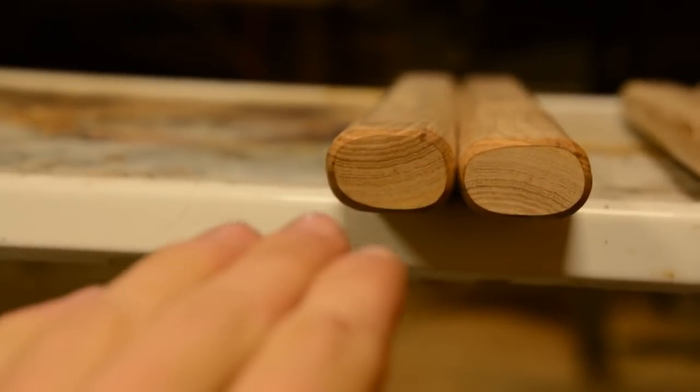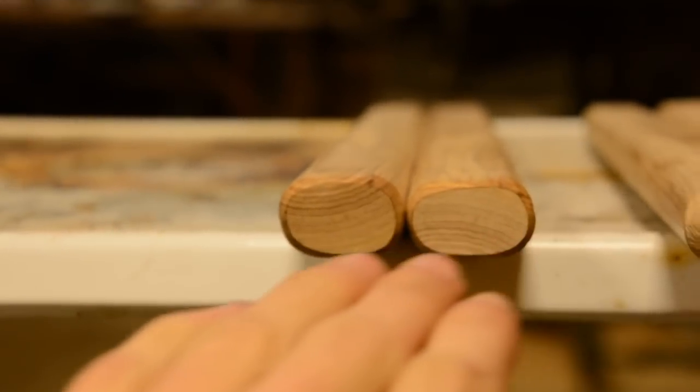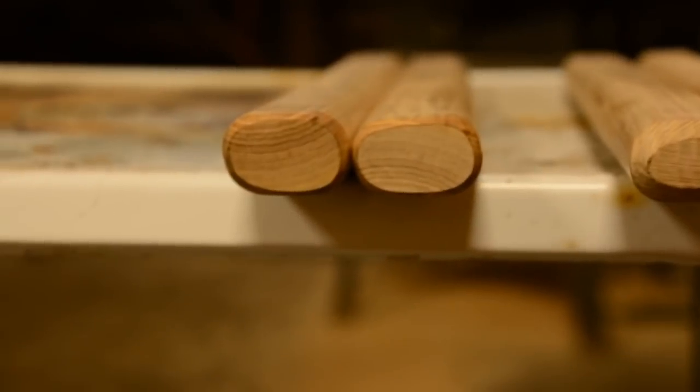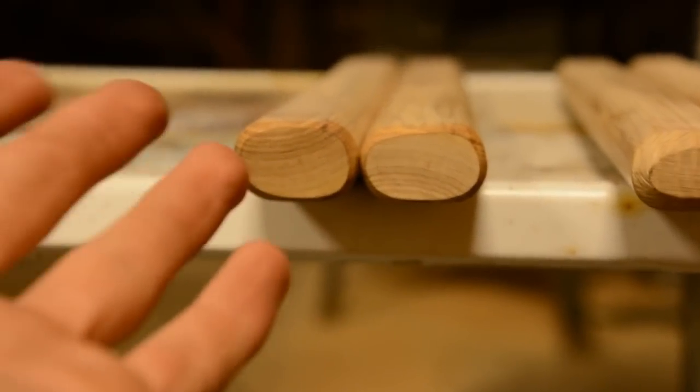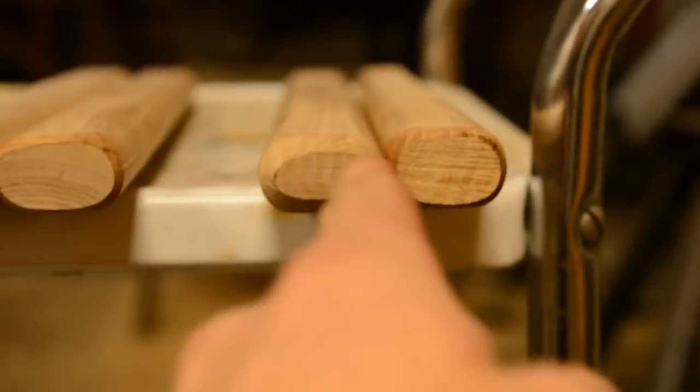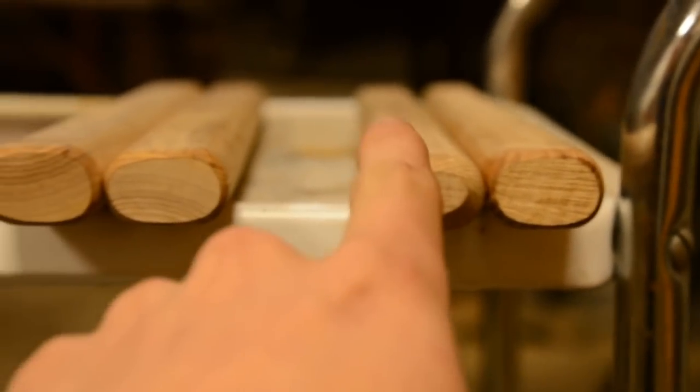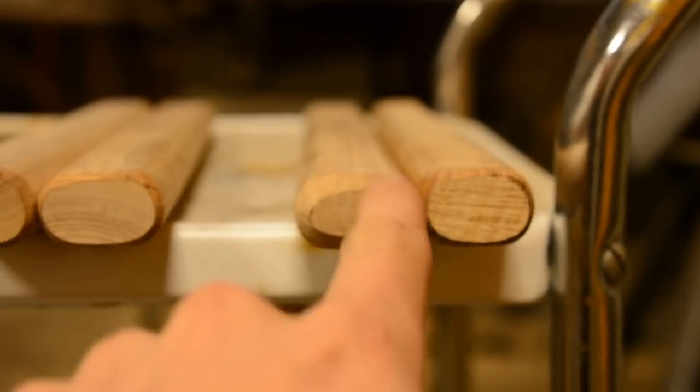You can see that the grain runs basically parallel to the handles. There's obviously a curve there because the wood came from a round tree, but you can see that we're mostly parallel. And then if we pan over here, even though it's hard to see, you can see that the grain is running perpendicular to the hammer handle.